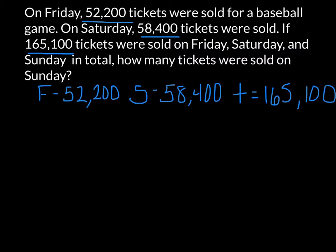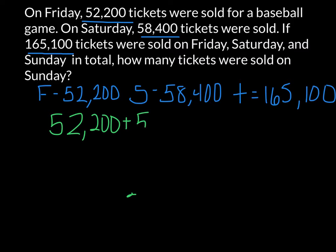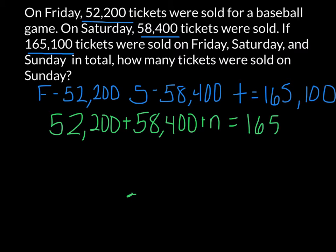Now we can use this information to write an equation. We add up our days: Friday plus Saturday plus our unknown on Sunday to equal the total. So we have 52,200 plus 58,400 plus n, which is Sunday — we don't know — equals 165,100.